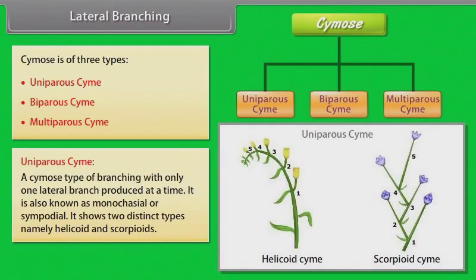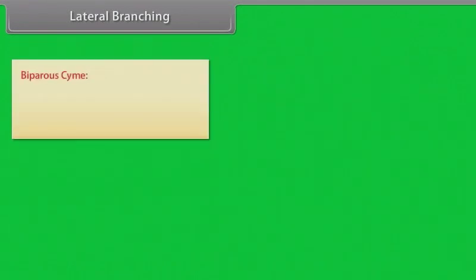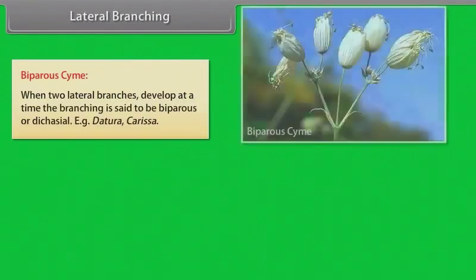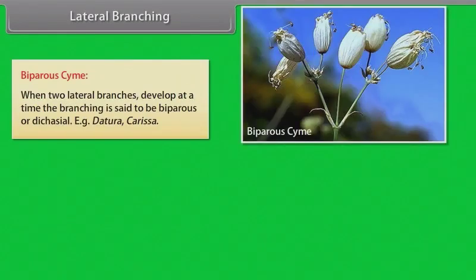Uniparous cyme is a cymose type of branching with only one lateral branch produced at a time. It is known as monocasial or sympodial. It shows two distinct types, namely helicoid and scorpioid. In biparous cyme, when two lateral branches develop at a time, the branching is said to be biparous or dichasial.